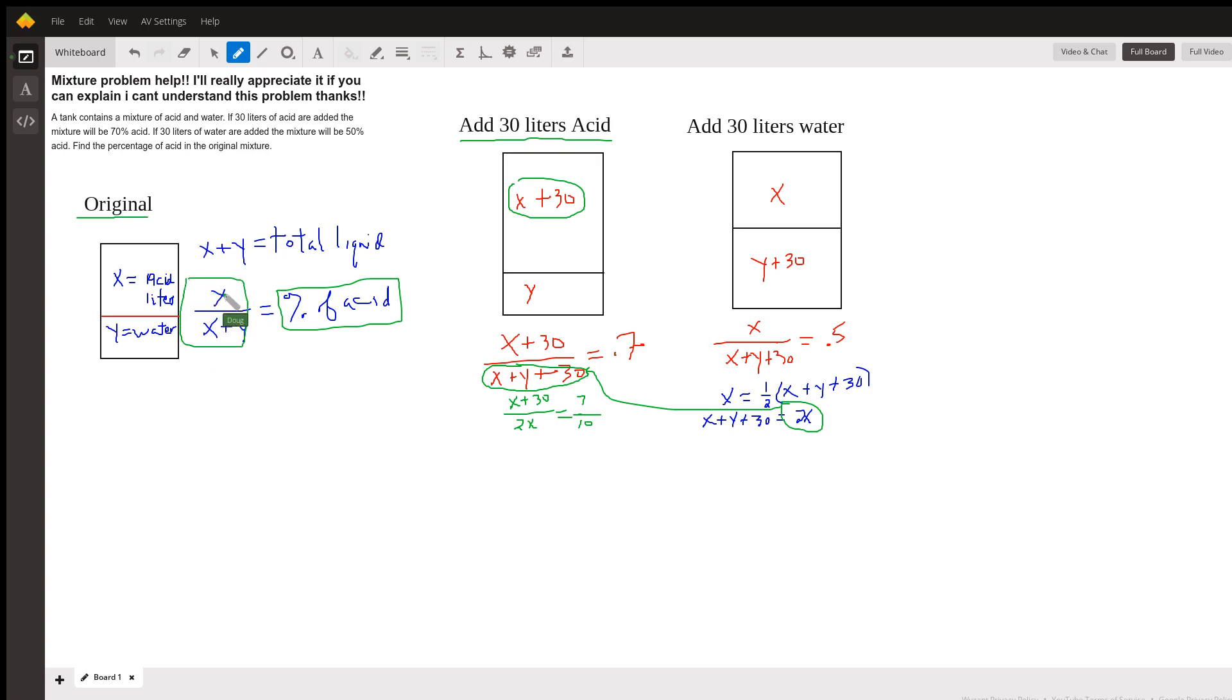Whatever values you get for x and y, substitute them into here, and you'll have your percentage of acid. So I'm going to leave you with that. Hope you can finish up the problem and hope this gave you some ideas on how to solve it. If you have any questions, post a comment.